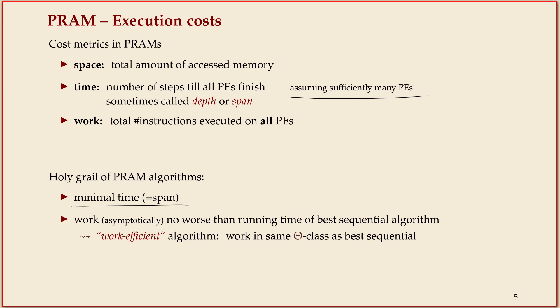Where we left off last time is we defined the running time of a PRAM program, a parallel algorithm, as consisting of these two parts: span and work. Span is the overall number of time steps until all the processing elements finish, but they can do this in parallel, whereas work is the overall number of instructions summed up over all the processing elements.